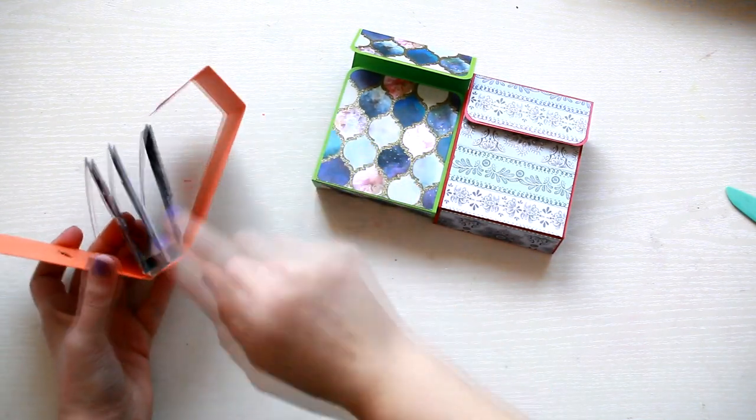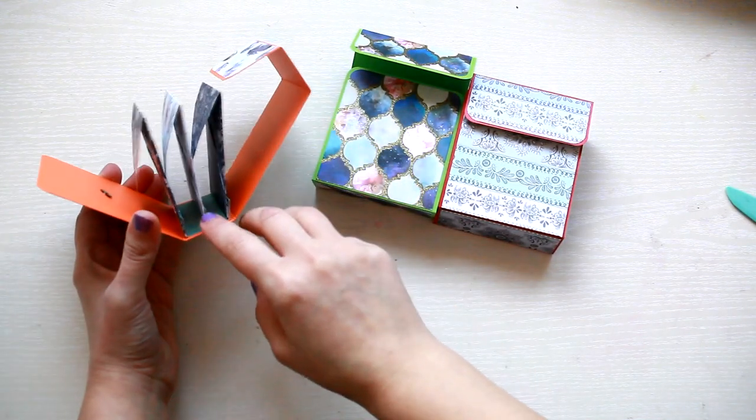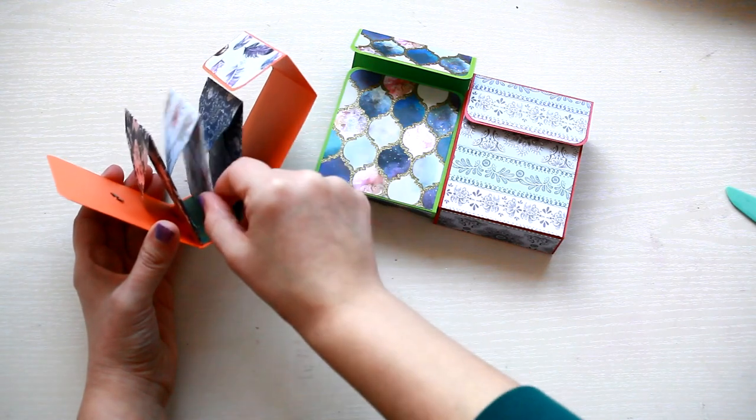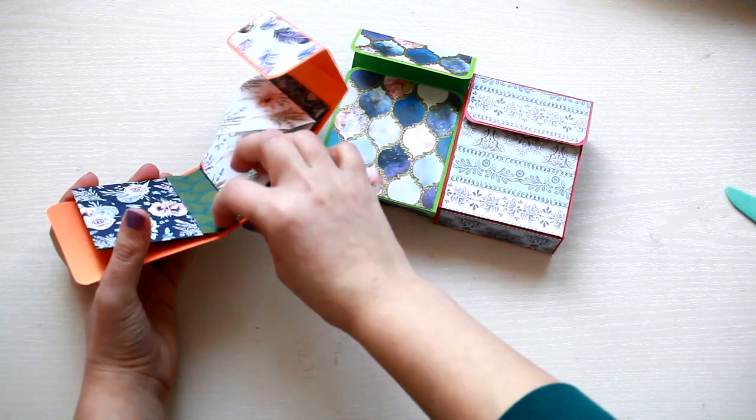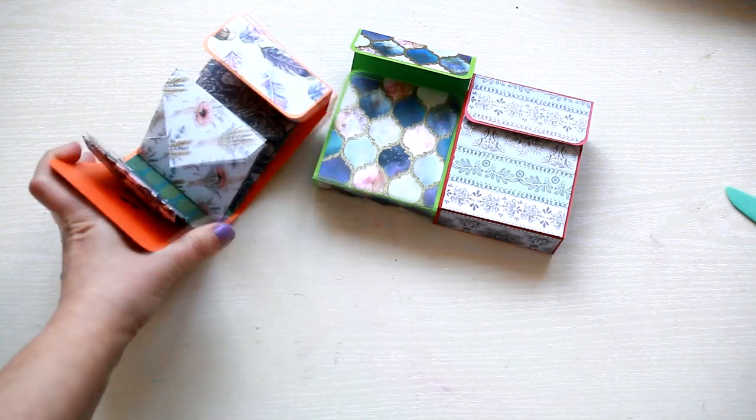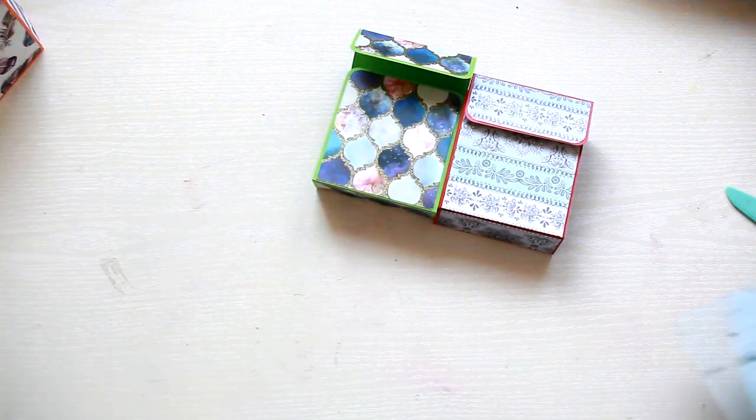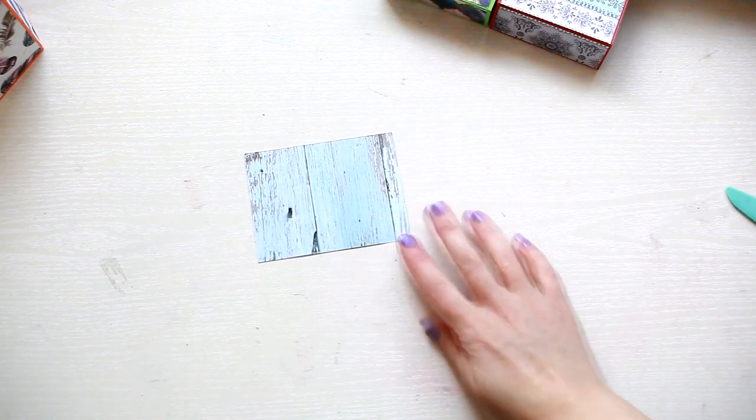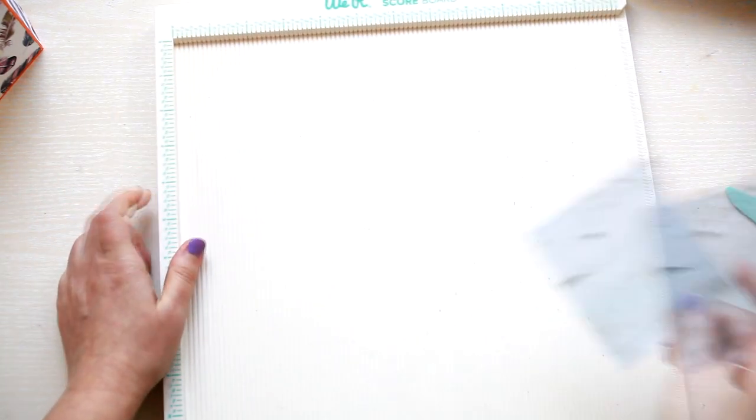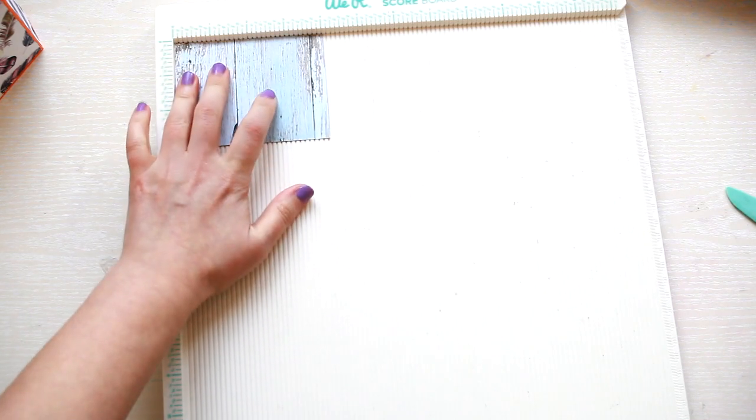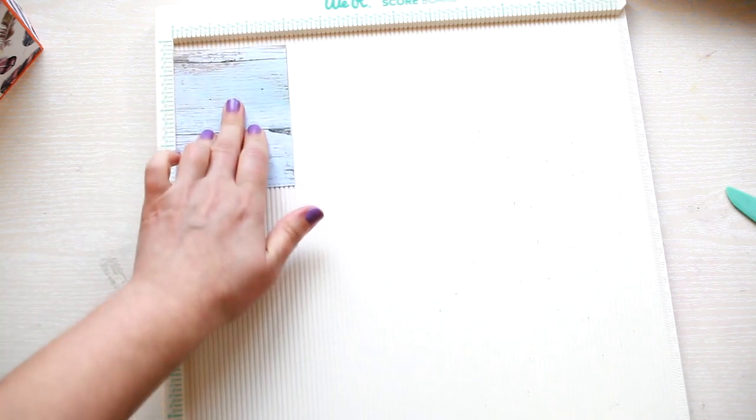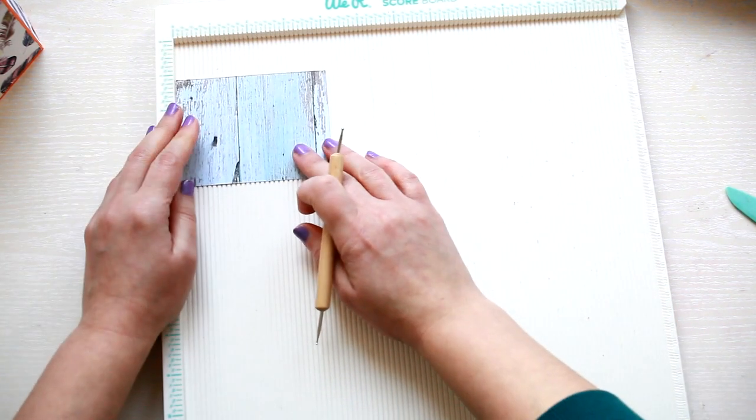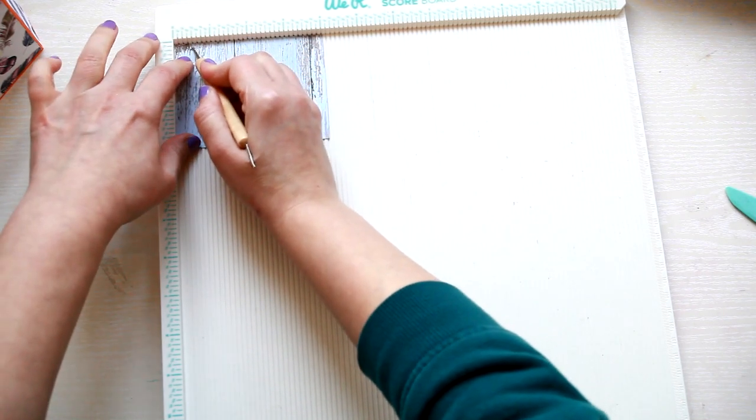For the next step we need to create the small bit on the bottom on which we are going to add the envelopes for the teabags. So for this part we are going to trim a piece of cardstock to 4 by 3 inches. And then we score on the long side at every half an inch.